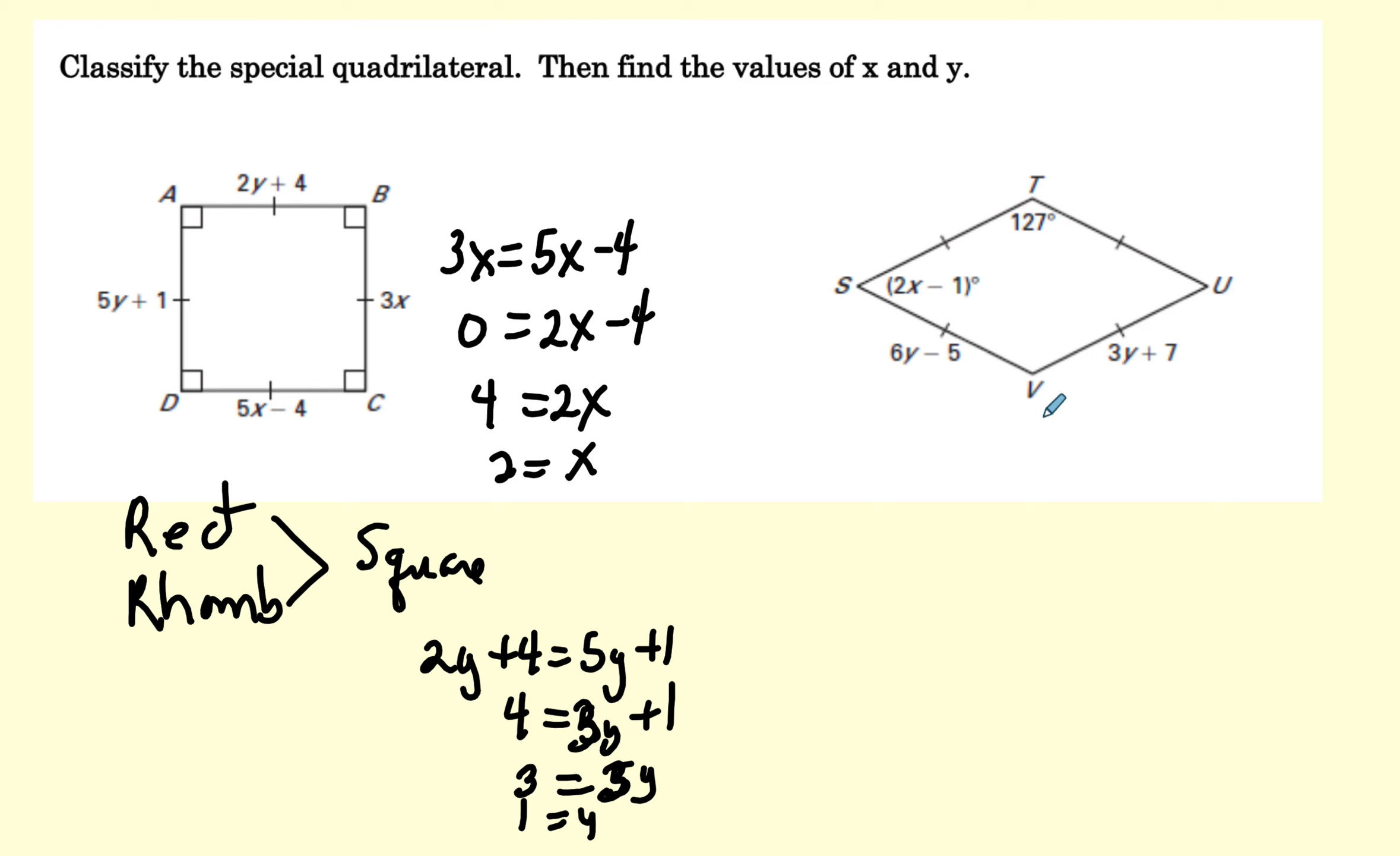I'm looking at this figure and I can see that it's a rhombus. So it's a rhombus, which means I know that these two sides are the same. So 6Y minus 5 equals 3Y plus 7. So this is 3Y minus 5 equals 7. 3Y equals 12, and Y equals 4.